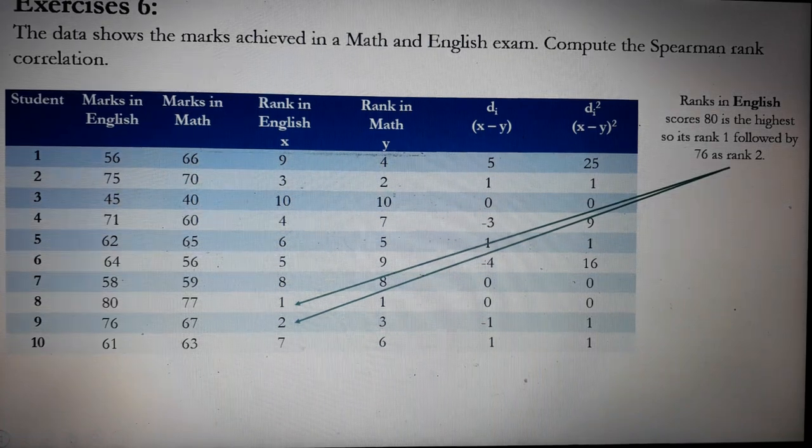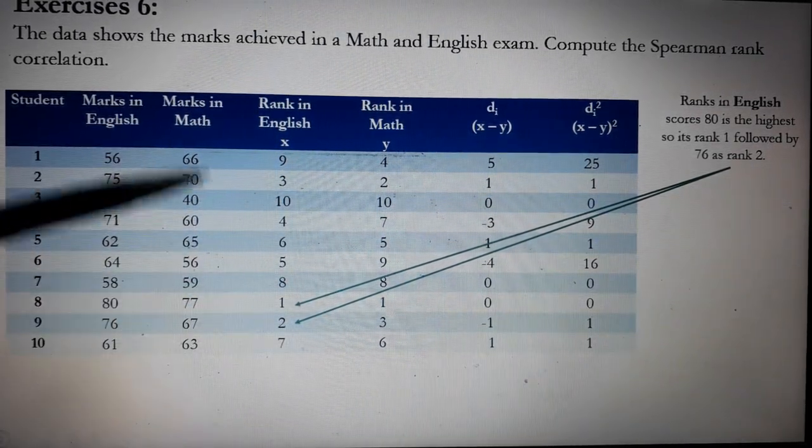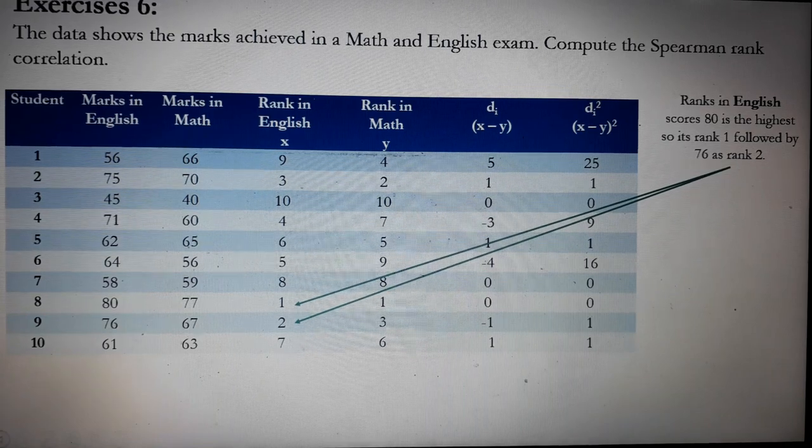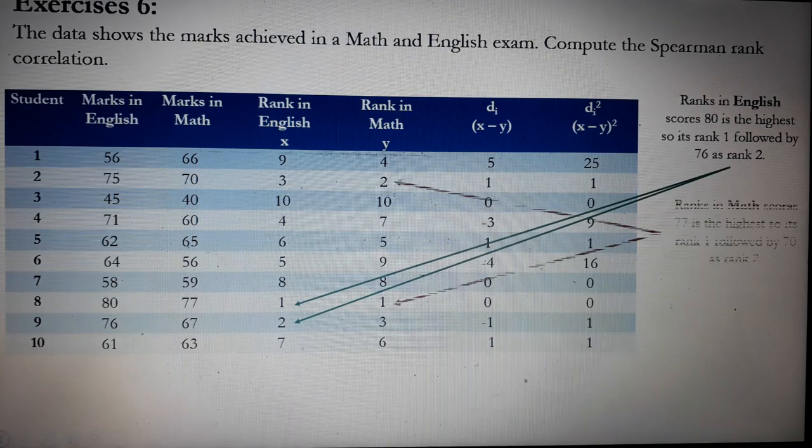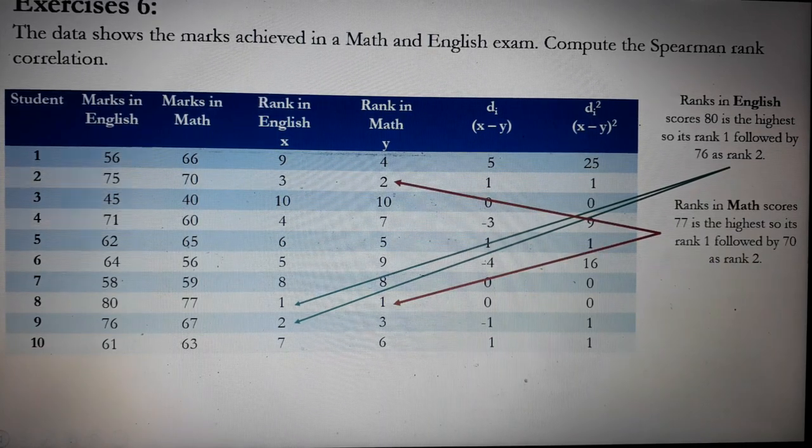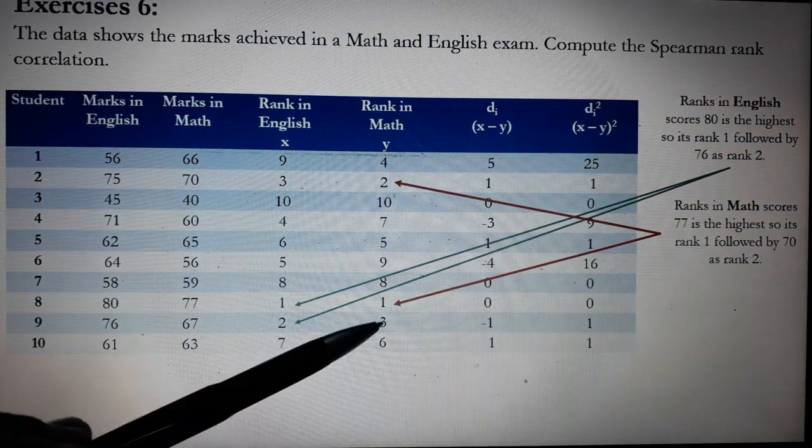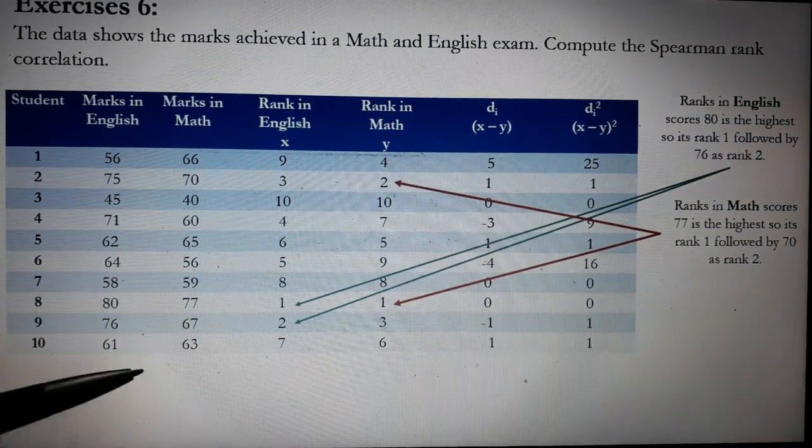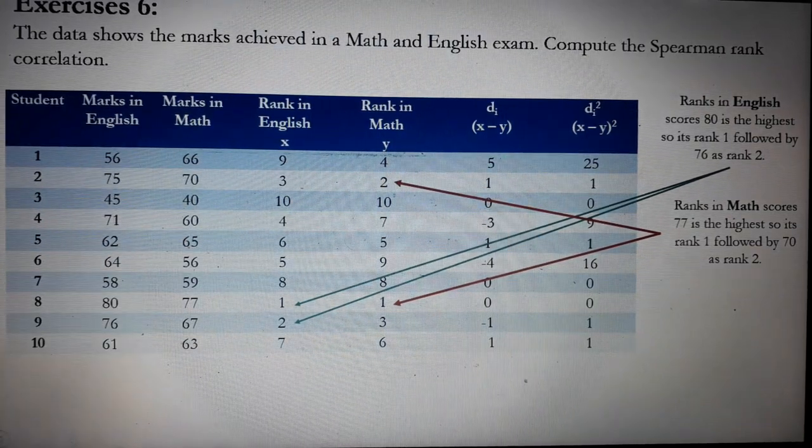Let's have the rank in math. In other words, the rankings of the marks in math. Let's consider the first and second ranks. So for math, the highest is 77. That's why it's rank number 1. Followed by 70. So it's rank number 2. And so on.